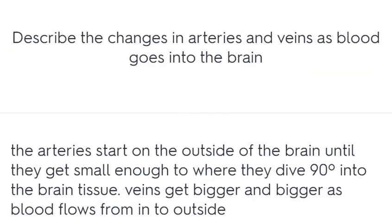Describe the changes in arteries and veins as blood goes into the brain. The arteries start on the outside of the brain until they get small enough to where they dive 90 degrees into the brain tissue. Veins get bigger and bigger as blood flows from inside to outside.